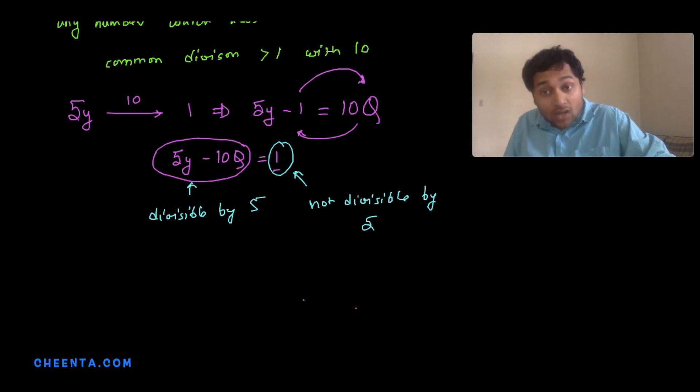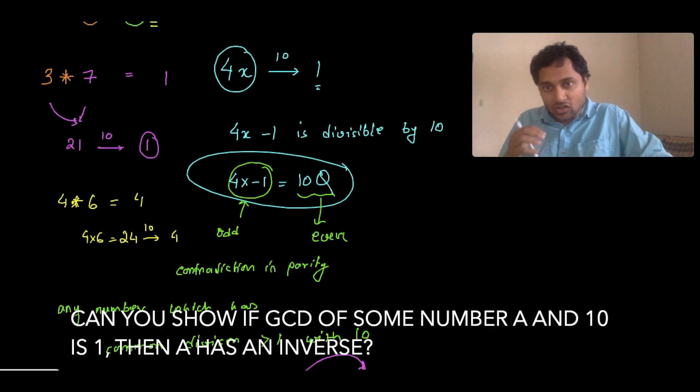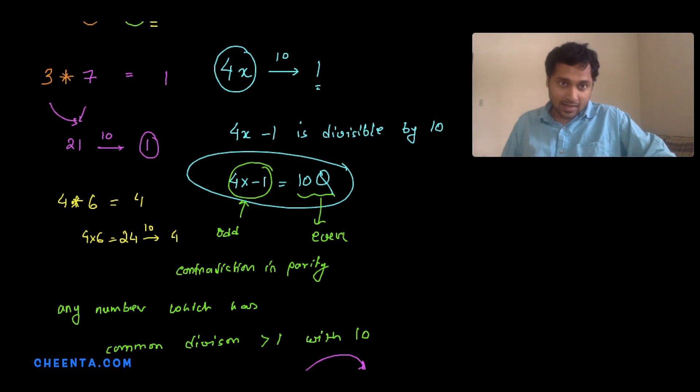The question is: can you show that every number with a GCD equal to 1 with 10 will have an inverse? That's the question for the next video, and you can give it a try before coming back to our website. The link in the description will take you to some more ideas, and I'll see you next time. Thank you for watching.